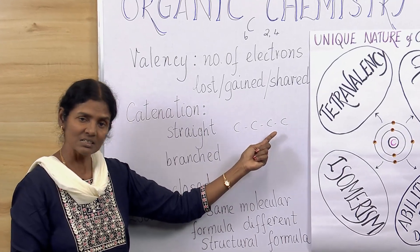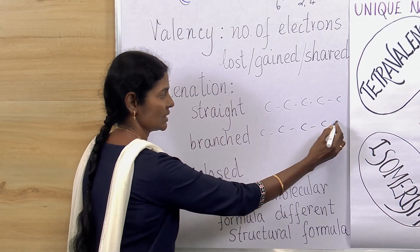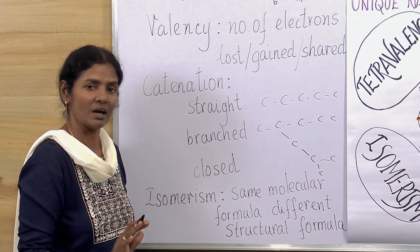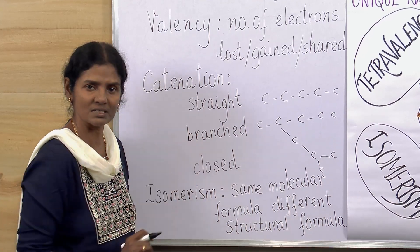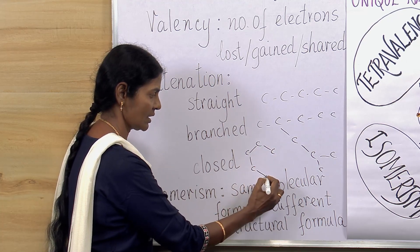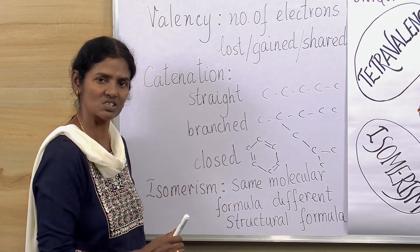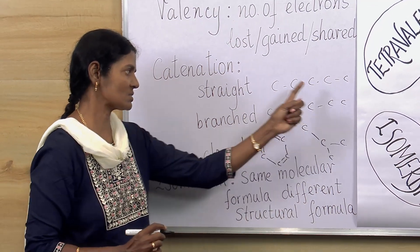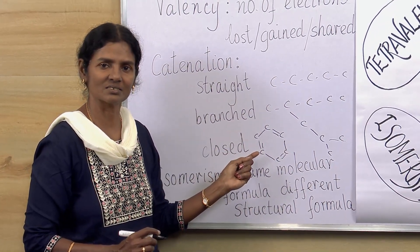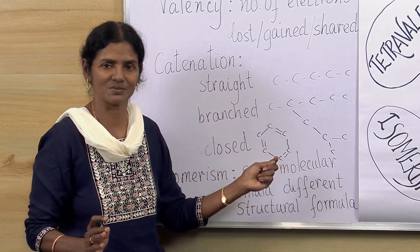One is as you're seeing here straight chain compounds. The other one could be branched like this and it could also have something like this. The branched way of having these linkages is also catenation. The last one is closed chain. This way also it can exhibit catenation. So three ways of exhibiting catenation: straight chain, branched and closed chain. This is pretty good because this makes it unite or combine so many thousands of atoms.